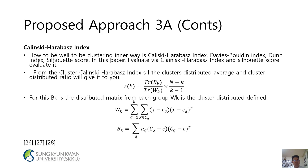Profile of Project 3A continued: The Calinski-Harabasz index — how and where to cluster data — uses the Calinski-Harabasz index, Davies-Bouldin index, Dunn index, and Silhouette score. In this paper, evaluation is via the Calinski-Harabasz index and Silhouette score. From the cluster Calinski-Harabasz index, the cluster-distributed average and cluster-distributed ratio are derived. Bk is the distributed matrix from each group.